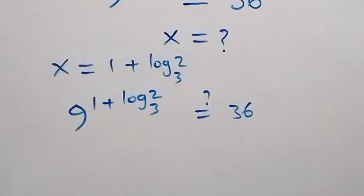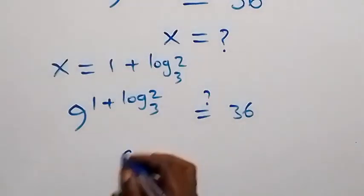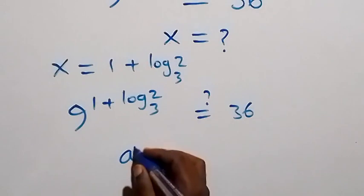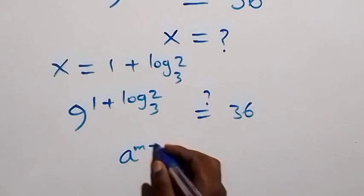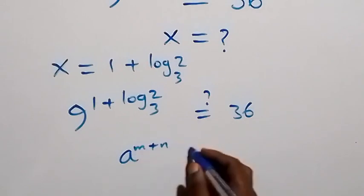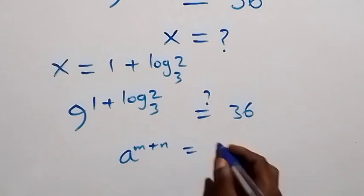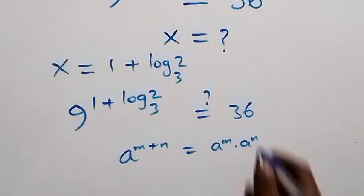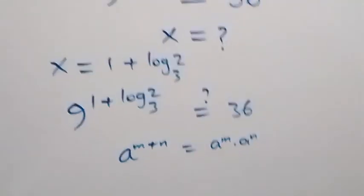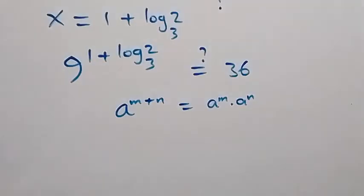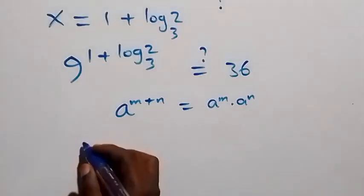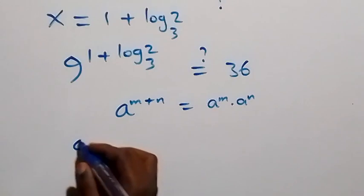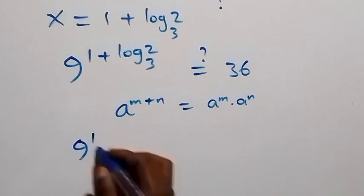From here we apply the law of indices: a raised to power m plus n equals a raised to power m times a raised to power n. So this becomes 9 raised to power 1 times 9 raised to power log 2 to base 3.